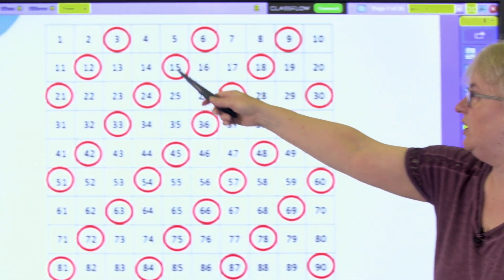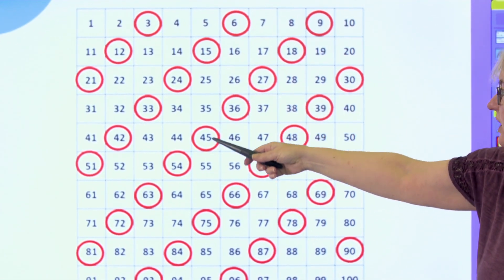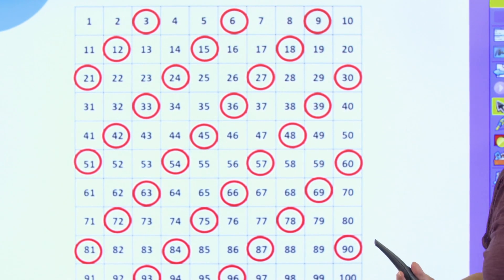Then they will start to look at it more closely and hopefully I would hope they will notice things like, look at the ones, it goes three, two, one, six, five, four, three, two, one, there's a definite pattern there.